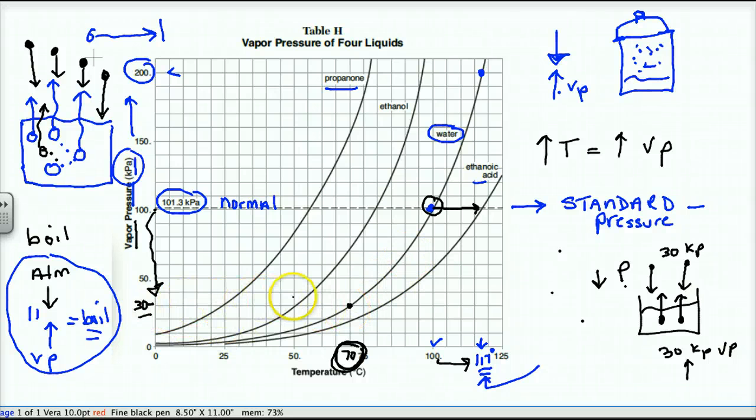So it boils at 100 at 101.3, but if the pressure dropped to 30, the water boils at 70. So here's two questions I can give you. If water boils at 70, what's the atmospheric pressure? 30. And if the atmospheric pressure is 30, what would be the temperature it'd boil at? 70. You lower the force above the liquid, it's easy to boil.